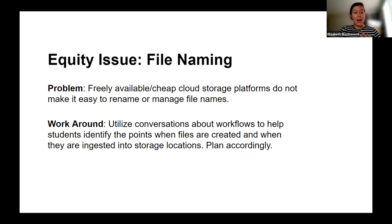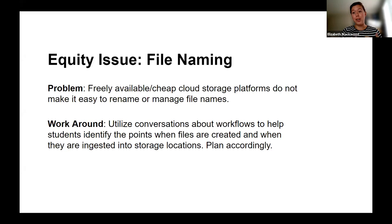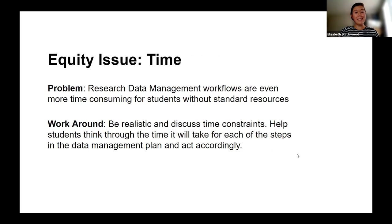The next equity issue was file naming. Freely available and cheap storage platforms don't make it easy to rename files. Many students were working on projects involving file manipulation and analysis based on file names. If you've ever tried to rename a large batch of files in Google Drive, you know the challenges. The workaround was to leverage the data management plan again — asking students to think critically about their workflows for data collection, identify when a file is generated and when it's ingested into storage, and plan accordingly so files are named correctly before being stored.